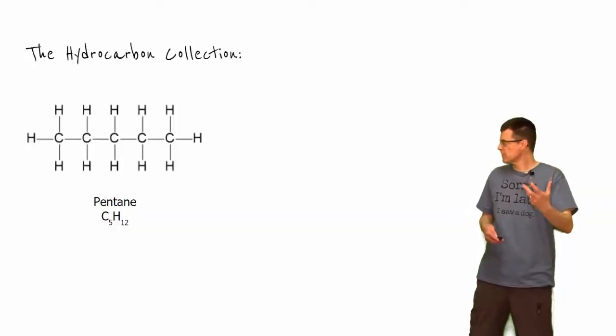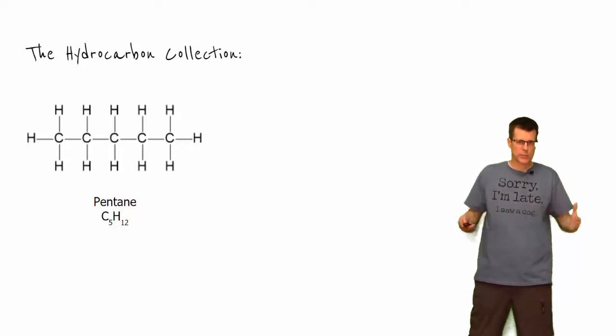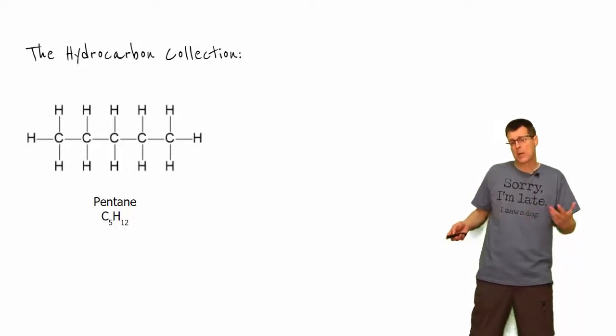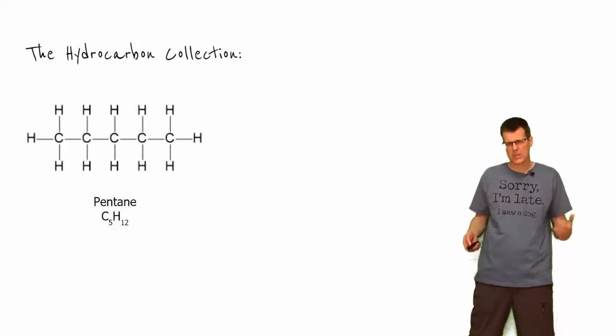To take a step back and look at hydrocarbons, compounds that involve hydrogen and carbon, we have alkanes so far. Then we've got pentane with C5H12, 5 carbons, 12 hydrogens.